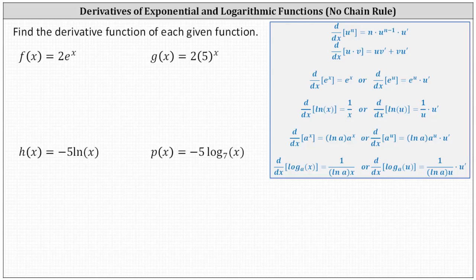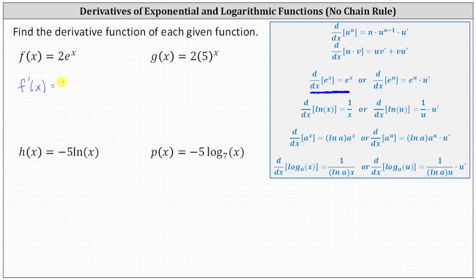The first function is f(x) equals two times e to the x. Looking at the derivative formulas, the derivative of e to the x with respect to x is equal to e to the x, indicating f prime of x is equal to the derivative of two e to the x, which is two times the derivative of e to the x, giving us two times e to the x.